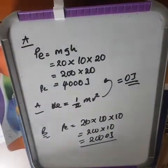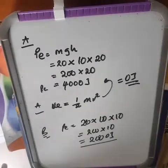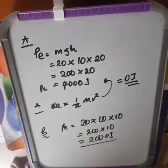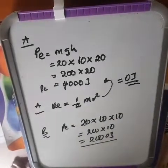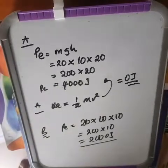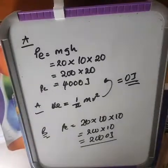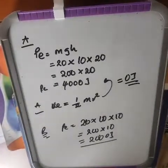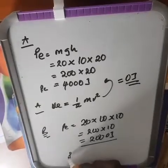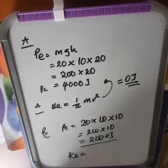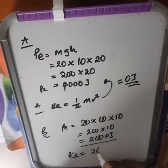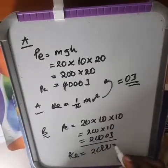Since potential energy is equal to 2,000 joules at point B, kinetic energy is also equal to 2,000 joules. At the midpoint, kinetic energy and potential energy are equal.